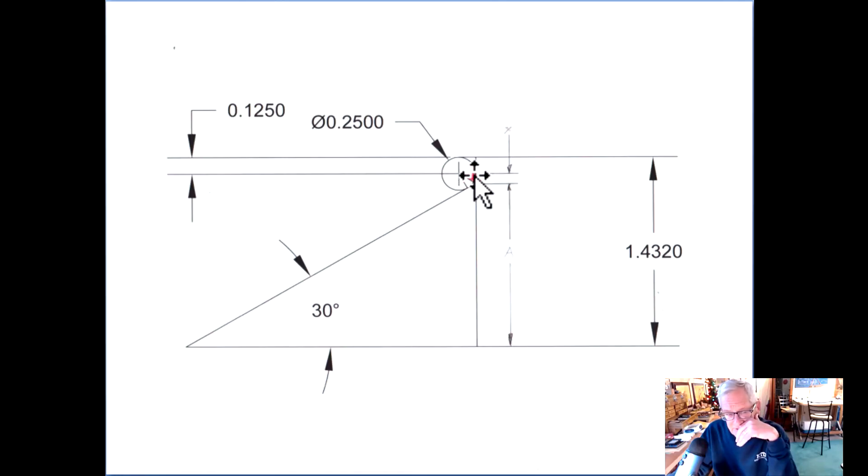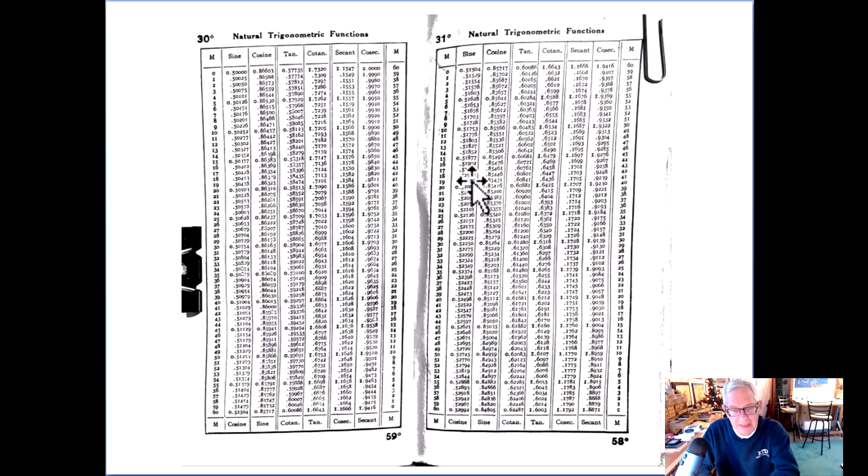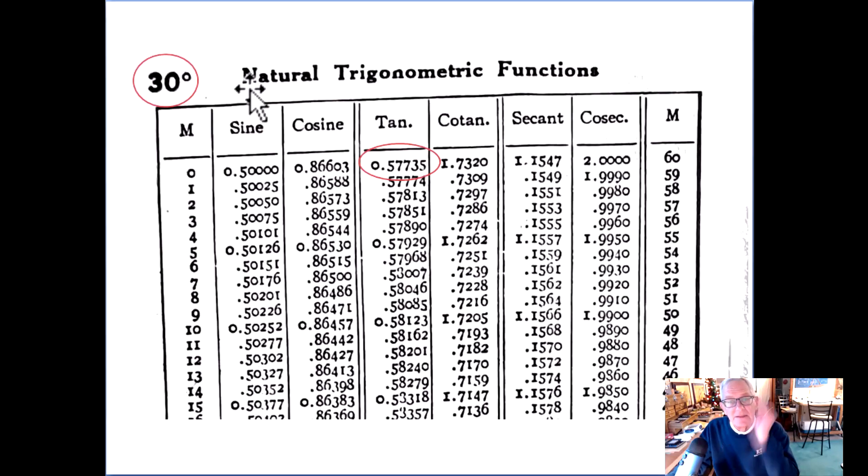Old school. Sorry for the crappy picture there, I scanned that in. That's my handy dandy Carr Lane book. We're going to go to the page with the 30 degree angle on it. The M stands for minutes, of course we're at zero minutes. 30 degrees zero minutes, we need the tangent: point five seven seven three five.